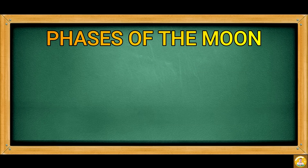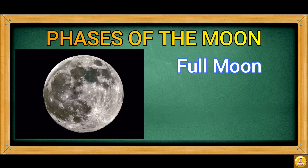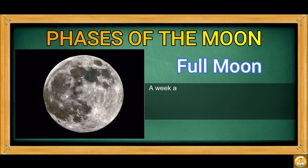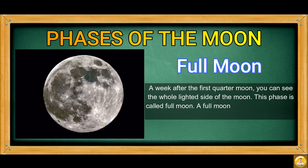Next, we have Full Moon. A week after the first quarter moon, you can see the whole lighted side of the moon. This phase is called Full Moon. A full moon appears as an entire circle in the night sky.